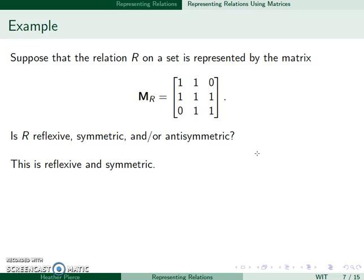However, it's not antisymmetric, since the only way to be both reflexive and antisymmetric would be if there was only 1s on the diagonal and nowhere else.